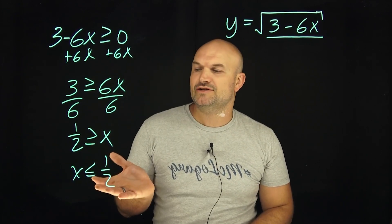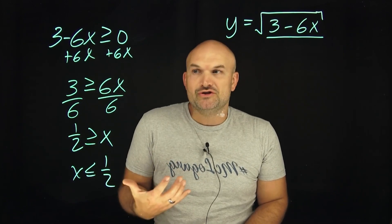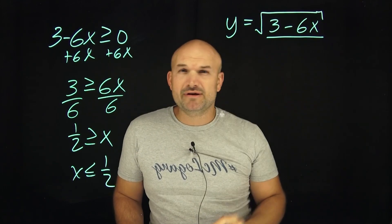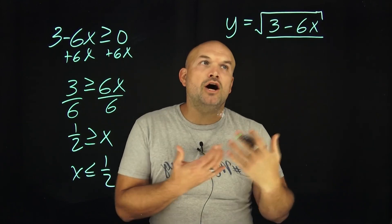What's a common number that's less than or equal to one half? I think the easiest number would be zero, right? Zero is usually always a great choice. So let's go and plug in zero. When I plug in zero, six times zero is zero. Three minus zero is three. Can you take the square root of three? Of course you can.